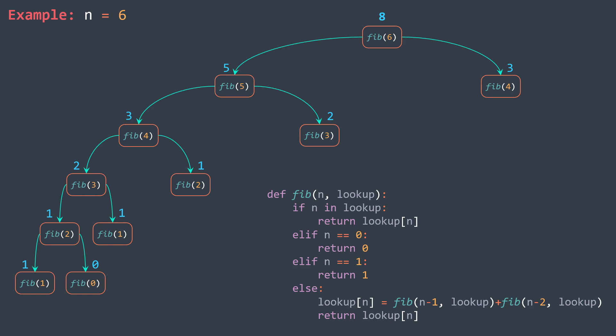As you can see in the code, the function has an extra parameter — the lookup table — and we added a base case to handle the case where we already computed the value. So if we find n in the keys of our lookup table, we directly return lookup[n]. We also modify the recursive case to store the value in the lookup table before returning it.